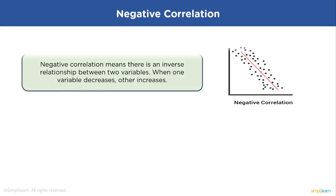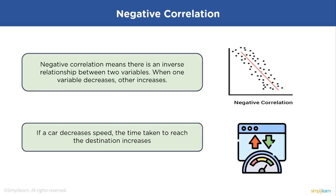Negative correlation is just the opposite. The relationship line has a negative slope and the variables change in opposite directions. For example, if you decrease the speed of the car, the time taken to reach the destination increases. This is negative correlation.